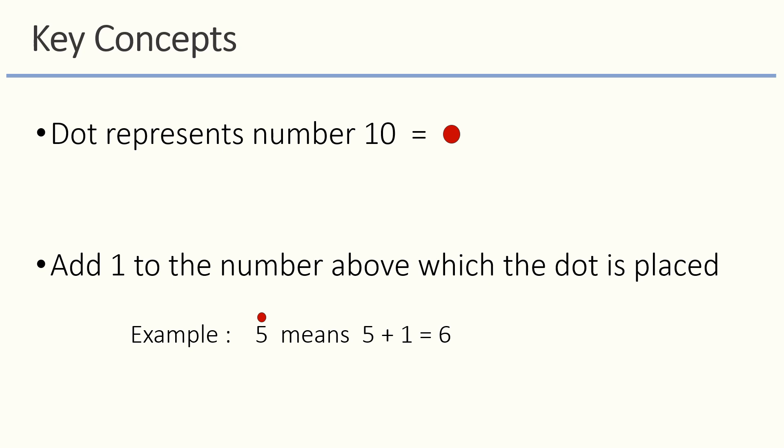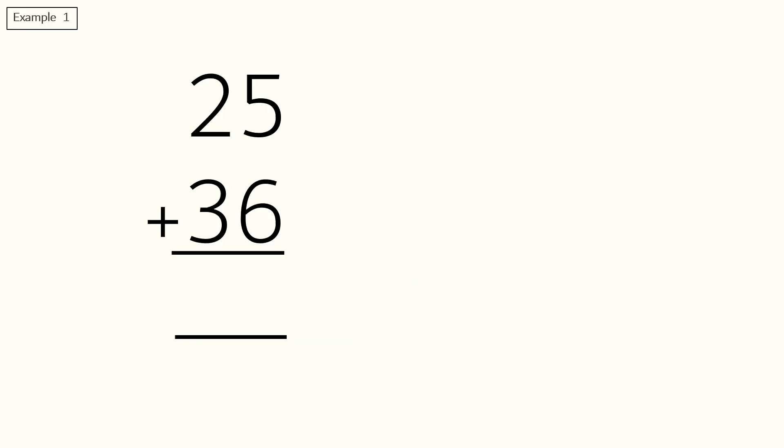Here we have to add 25 and 36. We will solve this example step by step so that you're comfortable with the concept. We have two sides here: units or ones and tens. We will start adding from the unit side. Five plus six is equal to eleven.